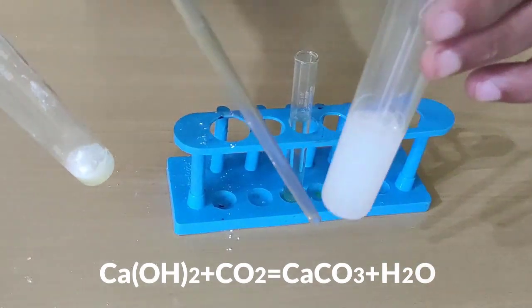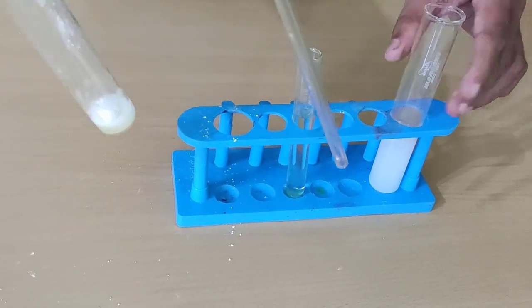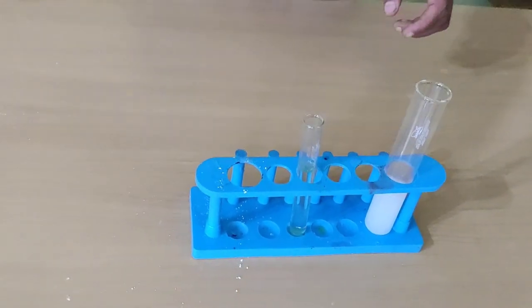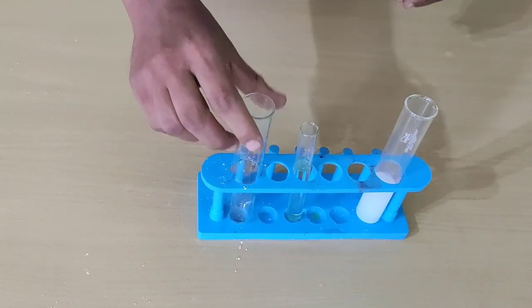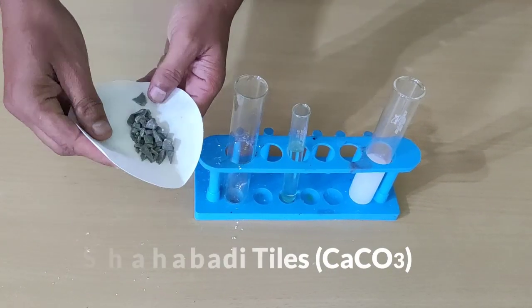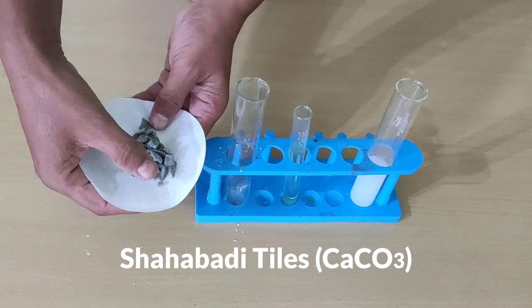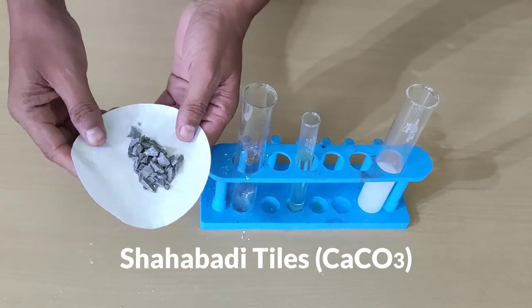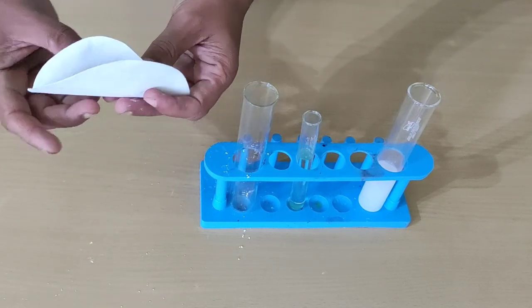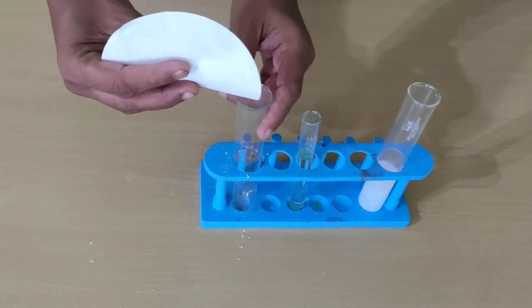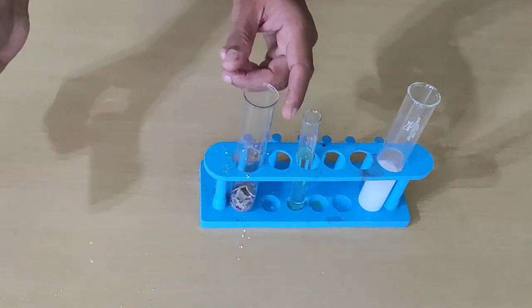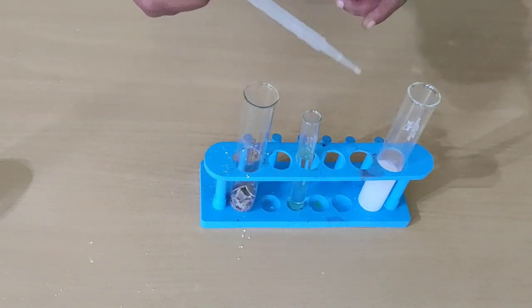Now we'll do a few more tests. This is another test tube and in this test tube I will add pieces of Shahabadi tiles. We can easily get it at home. I have broken it into pieces. It's also calcium carbonate and I will put it in this test tube. Again I will add a few drops of dilute hydrochloric acid on these pieces.